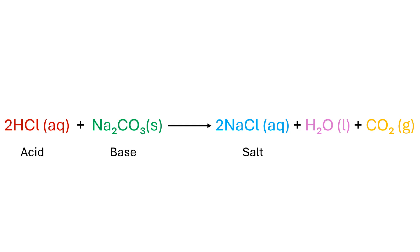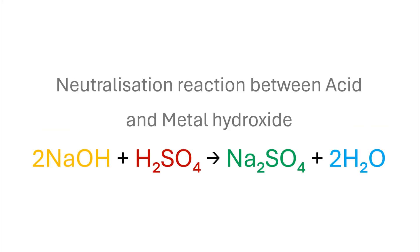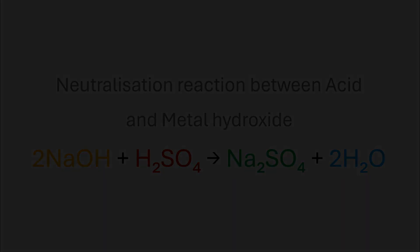A similar neutralization reaction is also seen between acids and metal hydroxide bases. For instance, the reaction between dilute sulfuric acid and sodium hydroxide follows the chemical equation shown here. In the case of acid-base neutralization reactions involving a metal hydroxide, two new products are formed. The neutralization endpoint can be visualized by a change in the color of the indicator added prior to the start of the reaction.